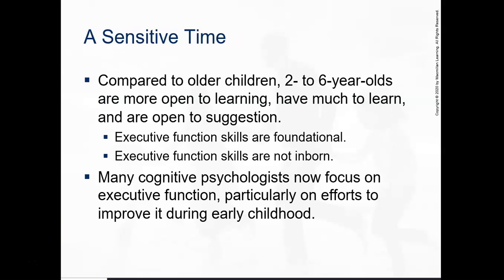They're able to rationalize some information at that tender age to carry out decisions. I mentioned in Chapter 8 the difficulty with foster care — that by age 7 the character of the individual has a foundation, and many families do not want to adopt a child that has been in foster care beyond age 7 because of the framework that has been laid. Ages 2 through 6 is a very sensitive time in development.